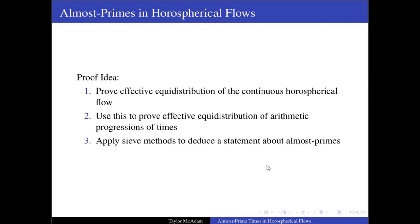Once we have the statement about arithmetic progressions, the theorem follows quite quickly. And since I'm not a number theorist, this is just a black box to me. So I'll focus mostly on steps one and two. I'll also remark that Sarnak and Ubis use sieve methods along with equidistribution of arithmetic sequences to directly get their result. It's different. They prove equidistribution of arithmetic progressions directly without first going through the continuous flow. They use more representation-theoretic techniques. My methods are softer and more geometric, but they produce a worse rate.